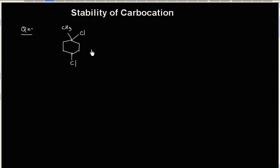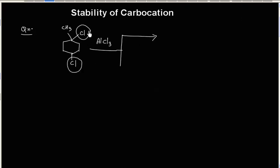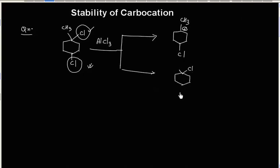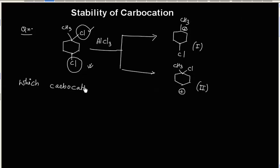If this compound is treated with AlCl3, we have two possibilities. We can generate two carbocations: either we can take Cl⁻ from here, which will generate this carbocation, or we can take Cl⁻ from here, which will generate this other carbocation. The question is, which carbocation will be formed — so either one or two will be formed mainly.